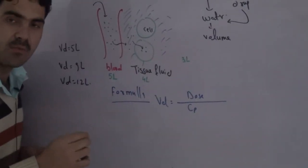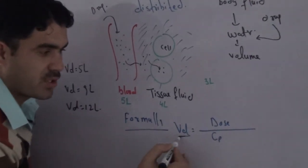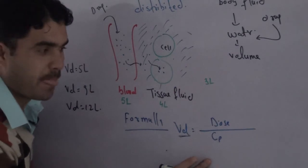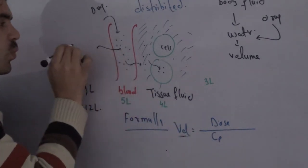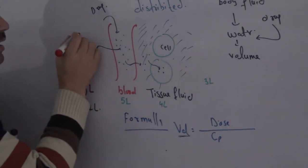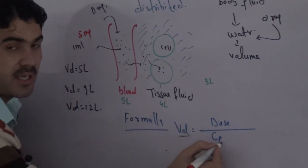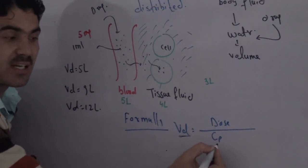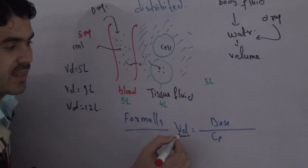Now for the formula: if you want to find the volume of distribution of any drug given to a patient, use the formula — Volume of Distribution = Dose / CP, where CP is the plasma concentration. If you take one milliliter of blood and find 5 milligrams of drug in it, that is 5 mg/mL — the concentration in plasma. Since plasma contains water, the drug dissolves in plasma water. Dividing the dose by plasma concentration gives the volume of distribution.